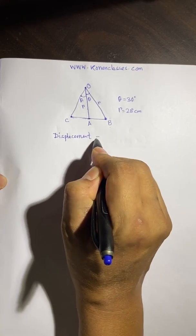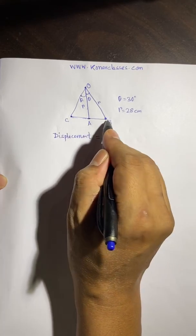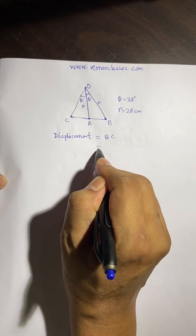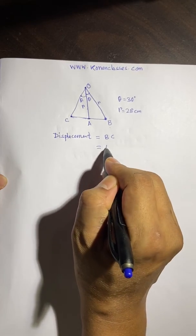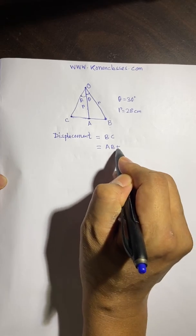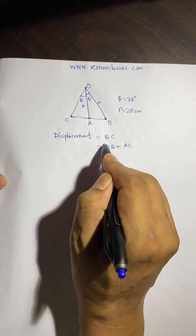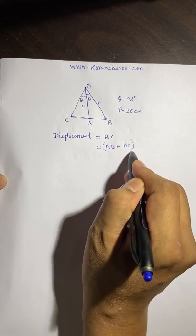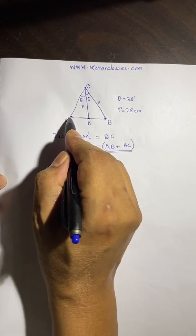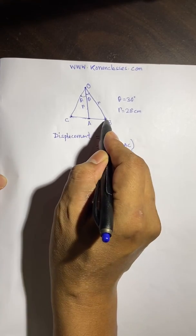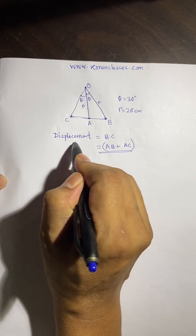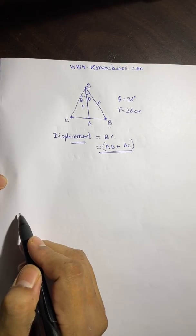The displacement will be from B to C, which can be broken into AB plus AC. So if we find the total point-to-point distance from B to C, we get the value of the displacement.